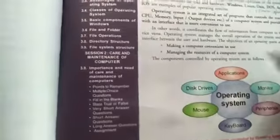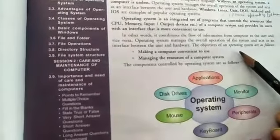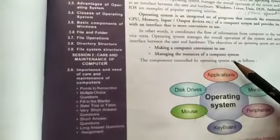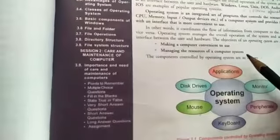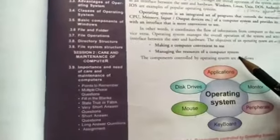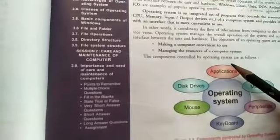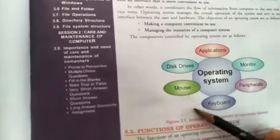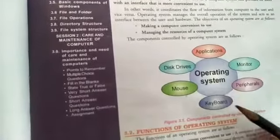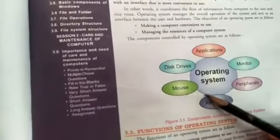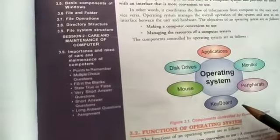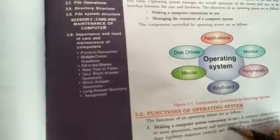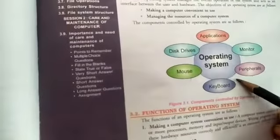The objectives of an operating system are as follows: first, making a computer convenient to use — you can use the computer system easily and effectively. Second, managing the resources of the computer system, such as applications, disk drives, mouse, keyboard, peripheral devices, monitors, and input/output devices.